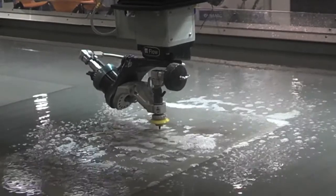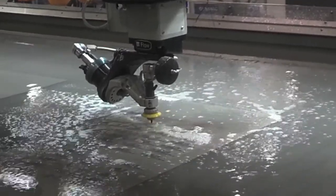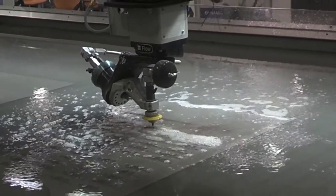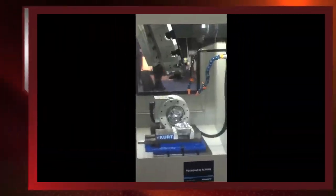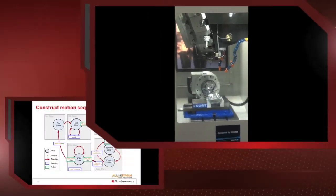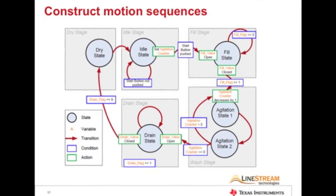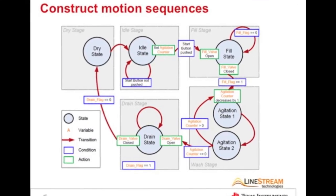For simple motion systems, we may want to transition from one speed or position to another. But complex motion systems, like those that we see in CNC machines, 3D printers, etc., require a series of motion sequences.